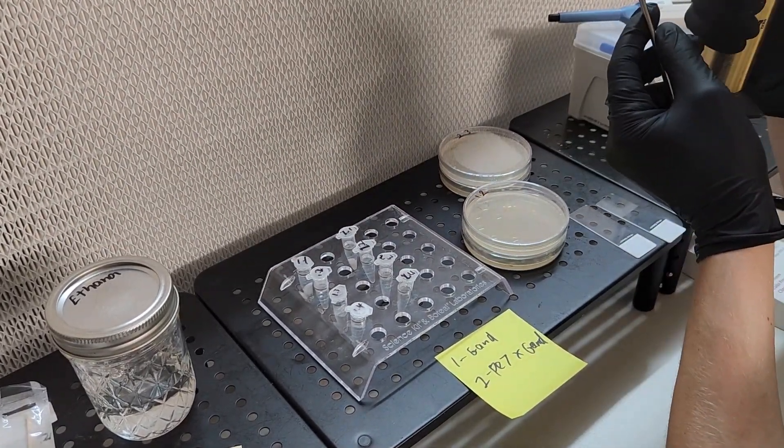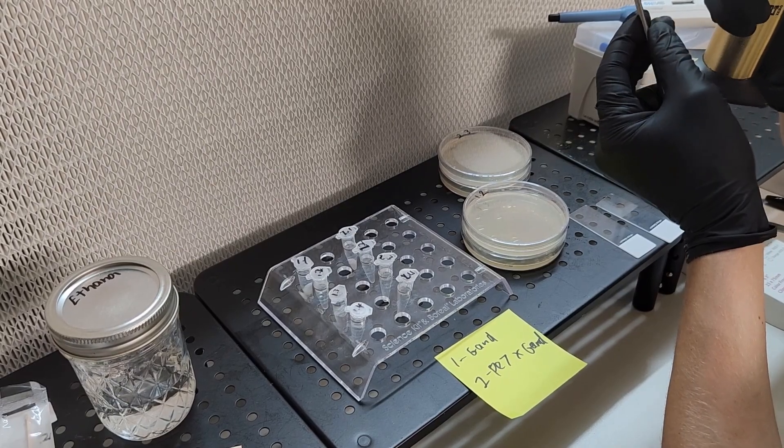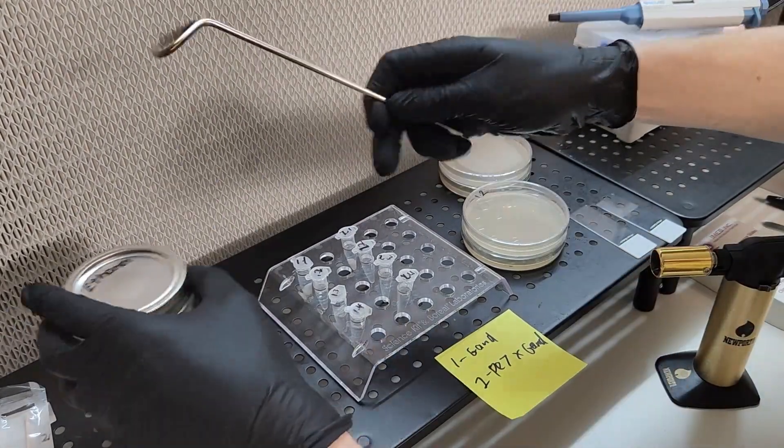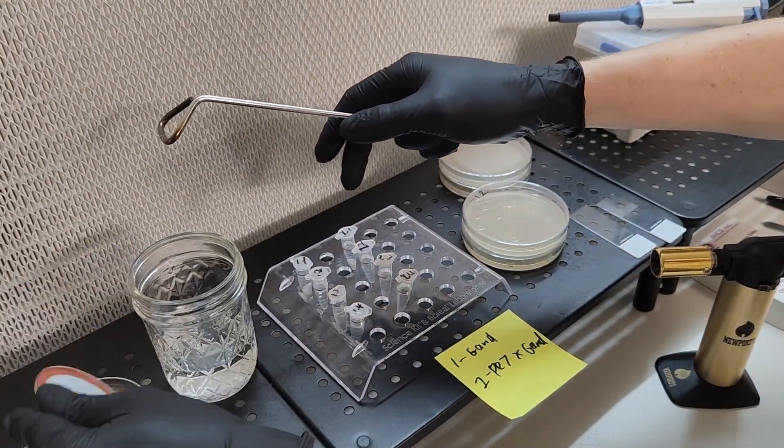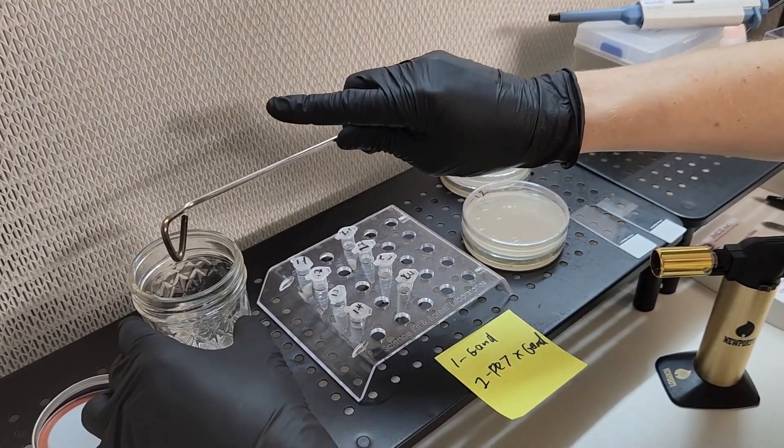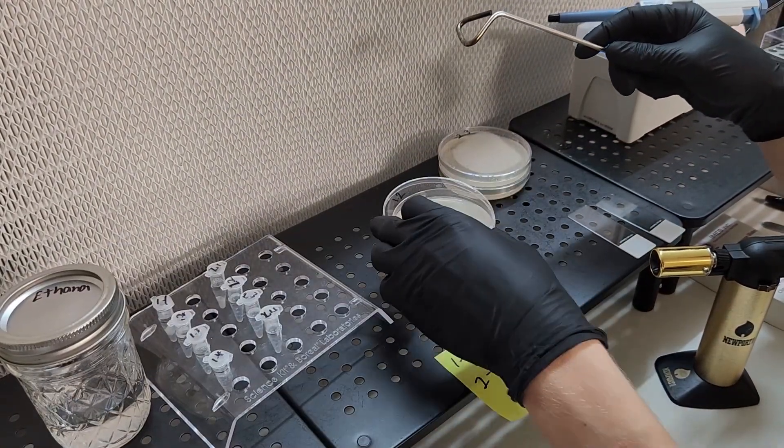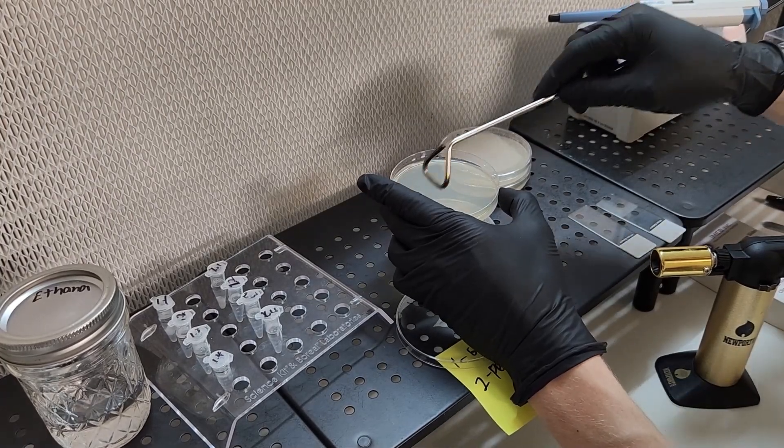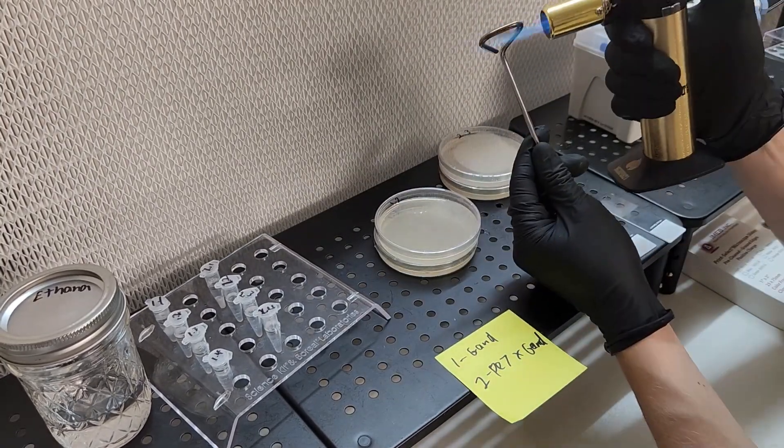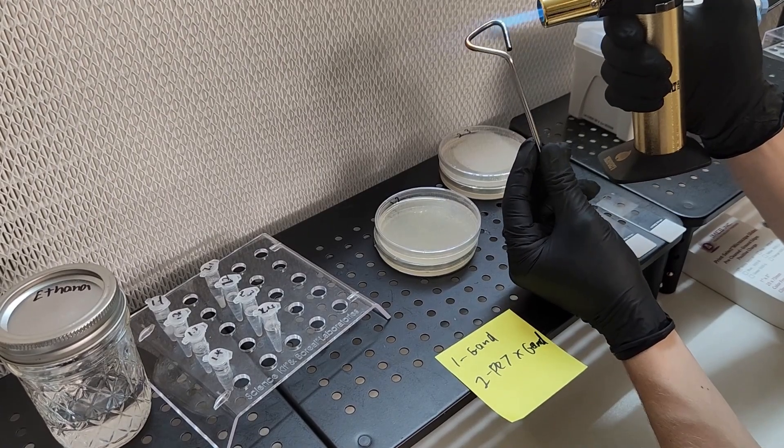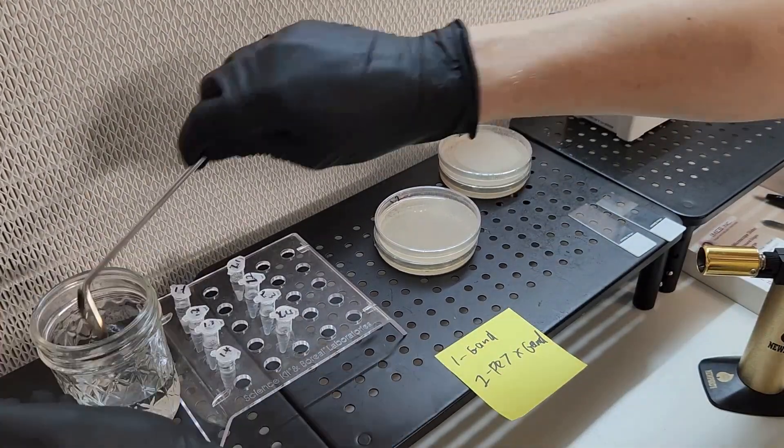To do this, make sure that your plate spreader is sterile before using, either buy pre-sterilized ones or a reusable metal one like I am using. After it cools down, simply take the plate spreader, place it flat on the surface of your agar plate, and move it across the surface in one direction, making sure not to overlap too much when you go back across the surface.